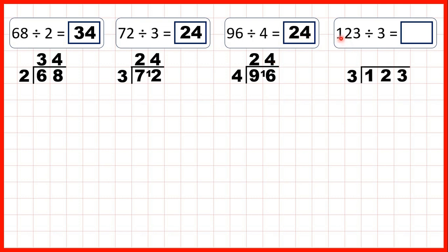And finally, we have 123 divided by 3. Our first digit is a 1, but 1 is less than 3. So when the first digit is less than the divisor, what we can do is take two digits together. So 12 divided by 3 is 4, because 4 times 3 is 12. And because 4 times 3 is exactly 12, we don't have a remainder to put in front of our ones digit. Instead, we just have 3 divided by 3, which is 1, giving us an answer of 41.